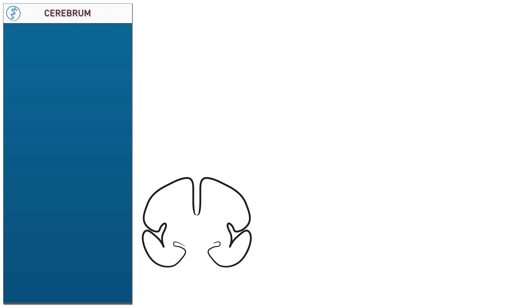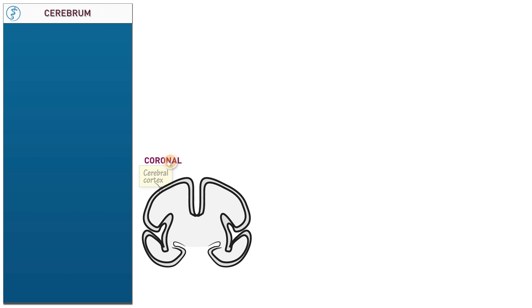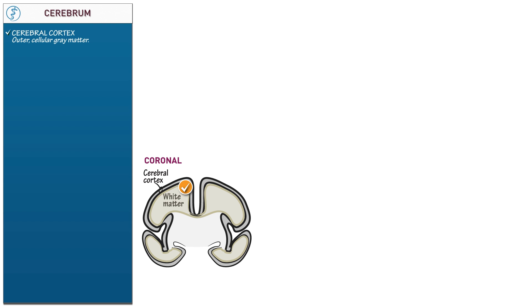Draw a coronal section through the brain so we can study the cerebral cortex and subcortical white matter. Draw an inner layer and label the space between the layers as the cerebral cortex, which is a relatively thin shell of neuronal tissue and the outer cellular gray matter of the brain. Now draw the subcortical white matter inner to the cerebral cortex, which forms a dense core of connection fibers, much thicker than the cerebral cortex, comprising the underlying axons.